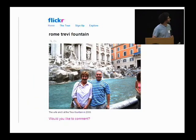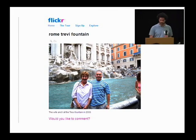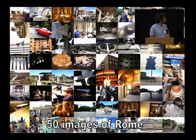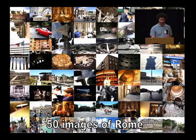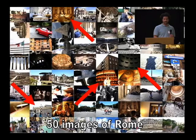Here's a typical photo from Flickr of Rome. Unless you know the people in it, it's probably not that interesting to look at. But if you look at not just one photo but a collection — here are 50 images from Flickr of Rome — you start to see the sites of Rome: Trevi Fountain, the Colosseum, the Pantheon, and the Vatican. We're starting to see a representation of Rome in this collection.